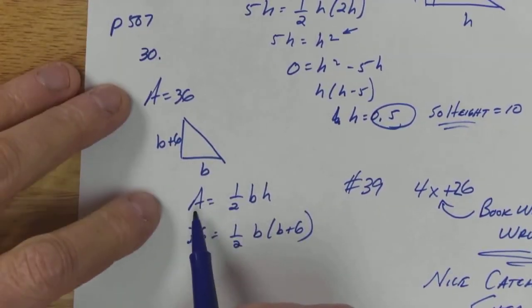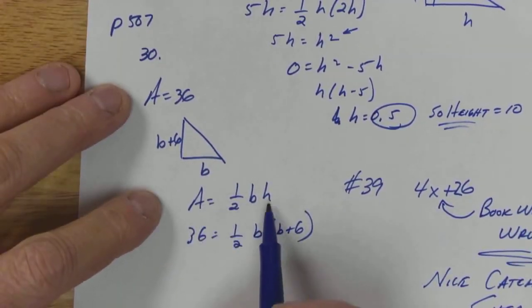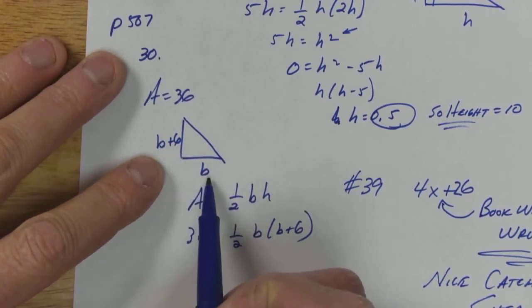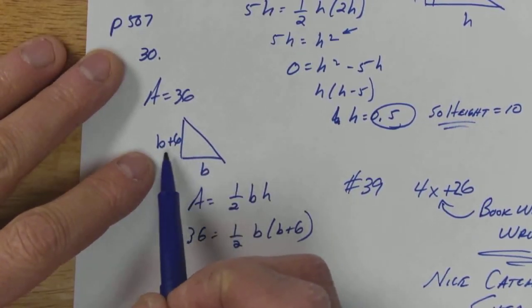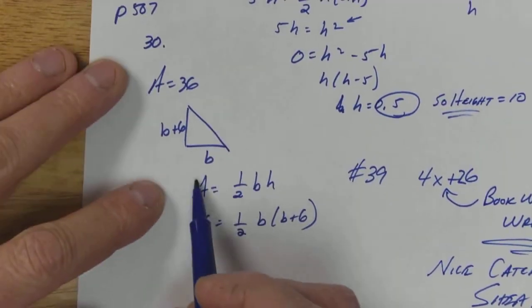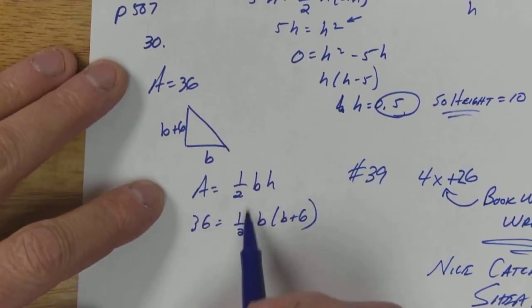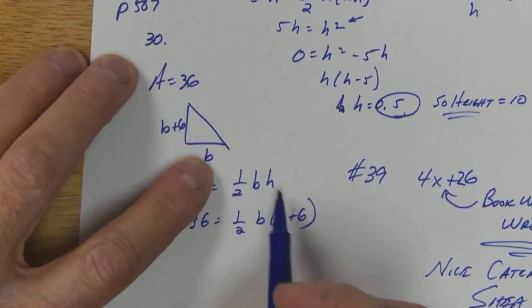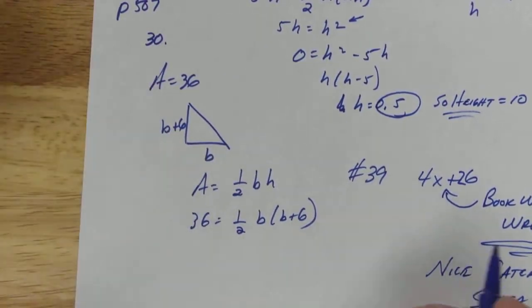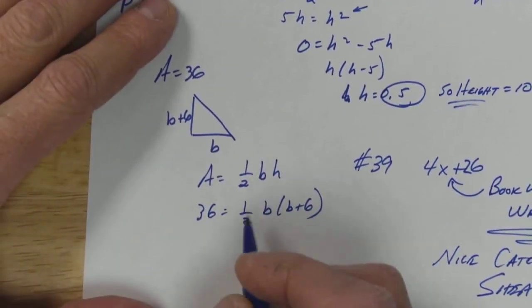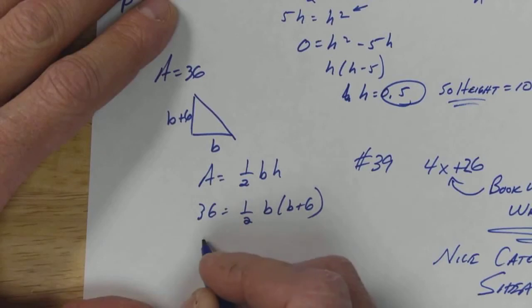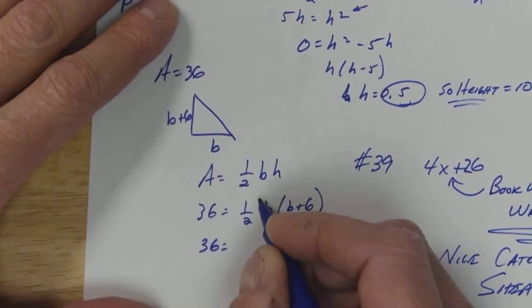Here's what we have: area equals one half base height. From the description, they said the height is 6 greater than the base, so base plus 6, because that's 6 bigger. So my area is 36, my base is b, and my height is b plus 6. So now what do we do? Well, I can't cancel these. They're on different sides, so let's just distribute.